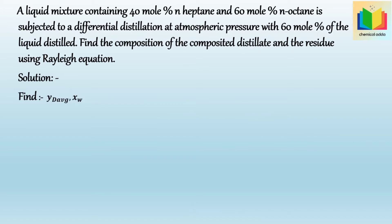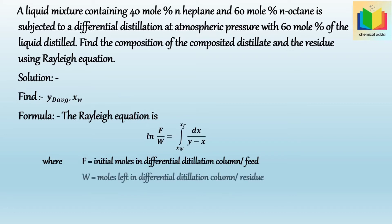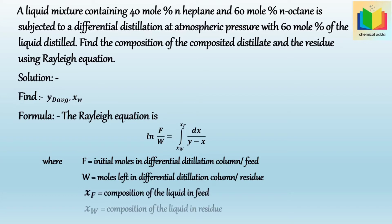To find these, we use the Rayleigh equation: ln(F/W) = integral from X_W to X_F of [1/(Y - X)] dX. Where F is the initial moles in a differential distillation column (feed), W is the moles left in the differential distillation column (residue), X_F is the composition of the liquid in the feed, and X_W is the composition of the liquid in the residue.